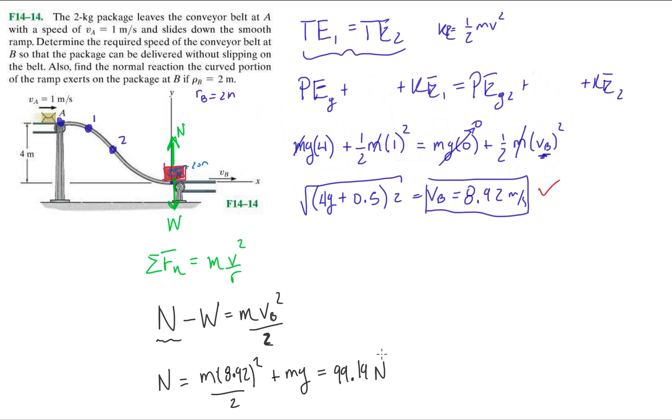When we plug everything in, we should get 99.19 newtons. So the normal is 99.2 newtons. And that's it.